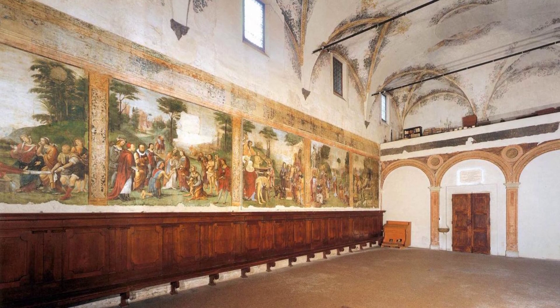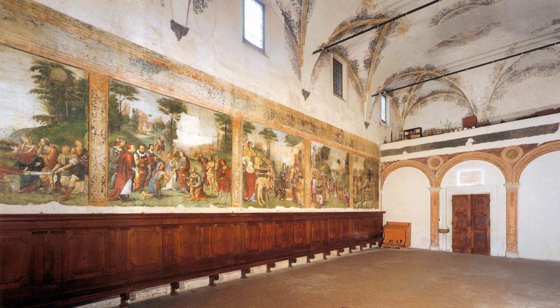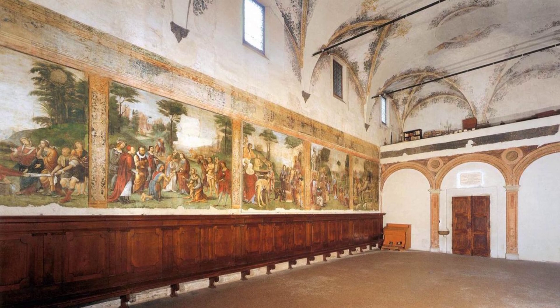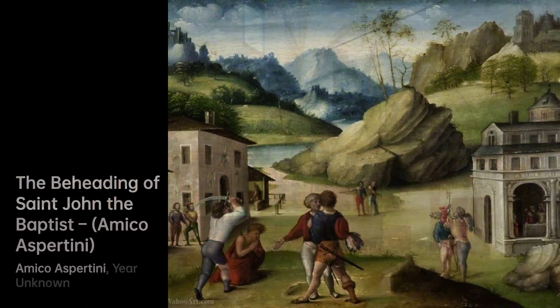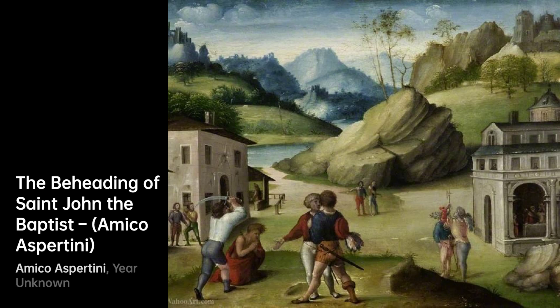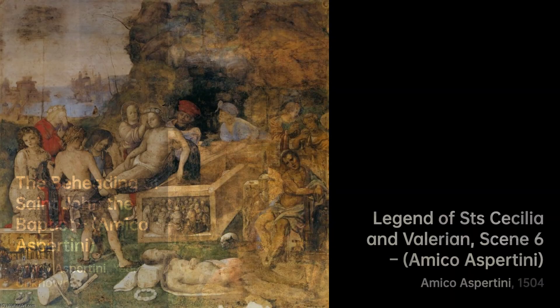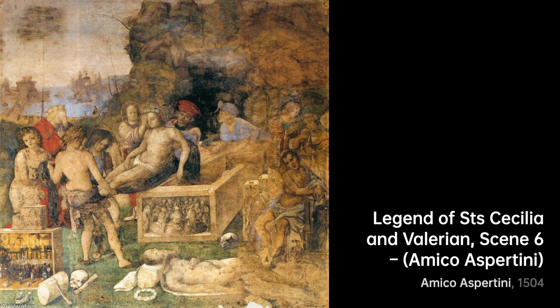His talent was further recognized when he was chosen as one of two artists to decorate a triumphal arch for the entry of Pope Clement VII and Emperor Charles V into Bologna in 1529. Aspertini also contributed sculptures for doors in the San Petronio Basilica in Bologna. His artistic abilities were not limited to painting, as he also adorned facades and created altarpieces.